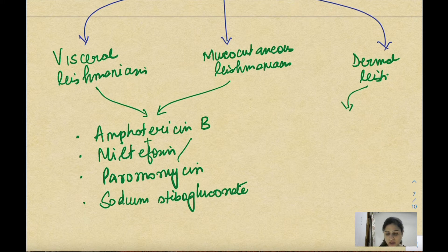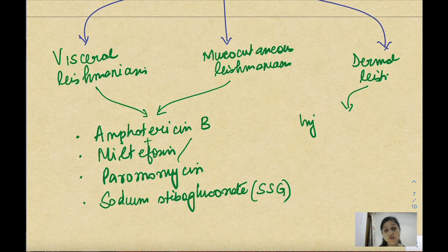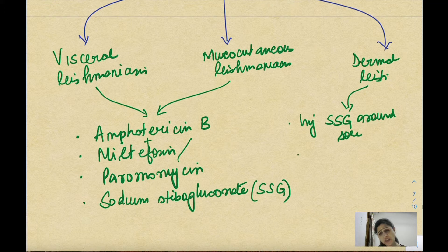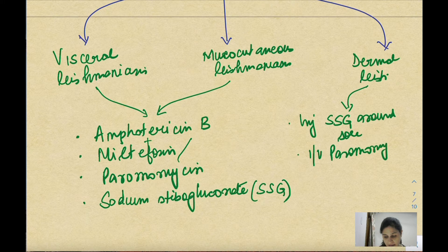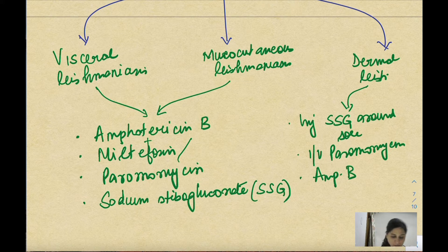For dermal leishmaniasis, the drug of choice is to inject sodium stibogluconate (SSG) around the lesion or sore. If the condition is serious, IV paromomycin can be given. The third option is amphotericin B.